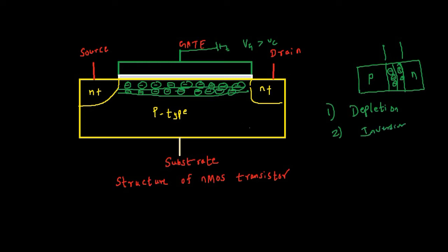This process is called inversion — the second step. When inversion occurs, the electron concentration in the substrate under the gate region increases. There will be electron concentration here, and these excess electrons constitute a path for carriers from source to drain, forming a conducting path also called the inversion region.